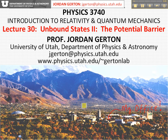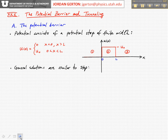What do I mean by potential barrier? What I've drawn here is a schematic of the kind of potential barrier I'm talking about. Very similar to what we had last time, there's a step up in the potential at a particular value of x. This is one-dimensional. We'll call that x equals 0. It goes up to some value U₀, and then it comes back down to 0 at x equals L. So we can divide our potential into three regions.